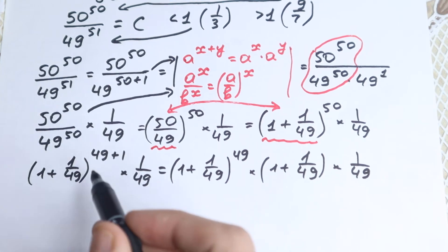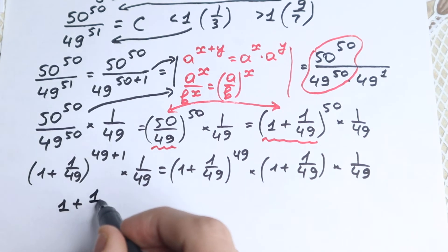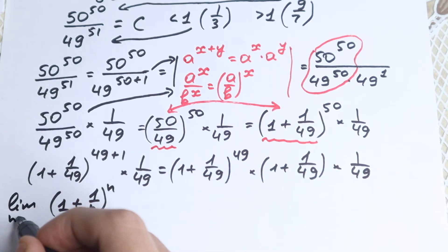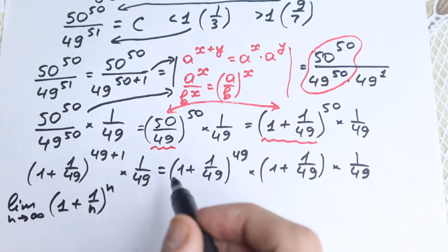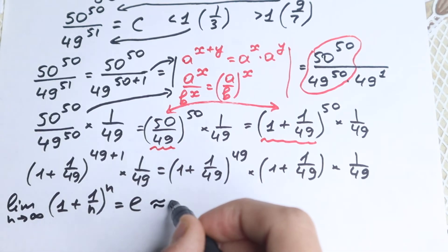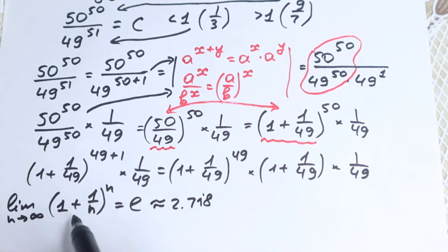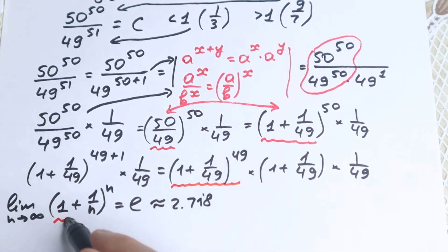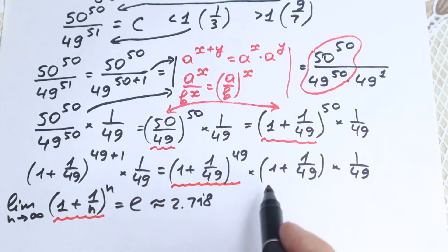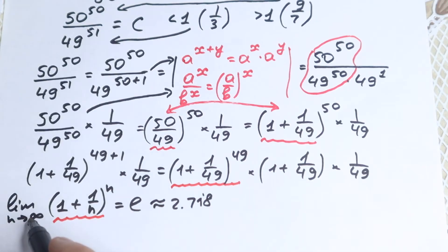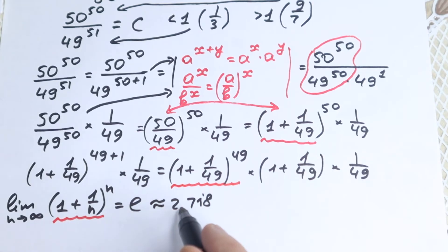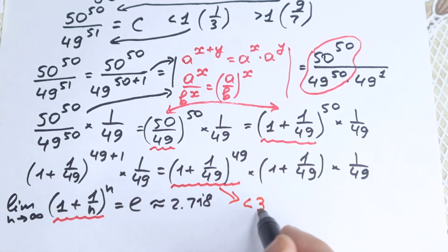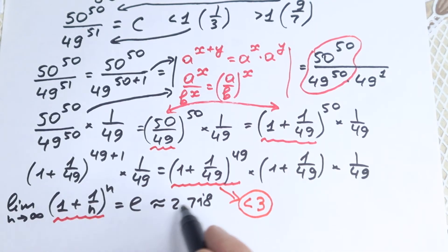Now I'll tell you why I did this. If you know a little about limits: the limit as n approaches infinity of 1 plus 1 over n, to the power n, equals e, which is approximately 2.718. So this perfect limit is less than 3. And our expression 1 plus 1 over 49 to the power 49 is the same form — and since even in the limit it only reaches about 2.718, this expression is definitely less than 3.